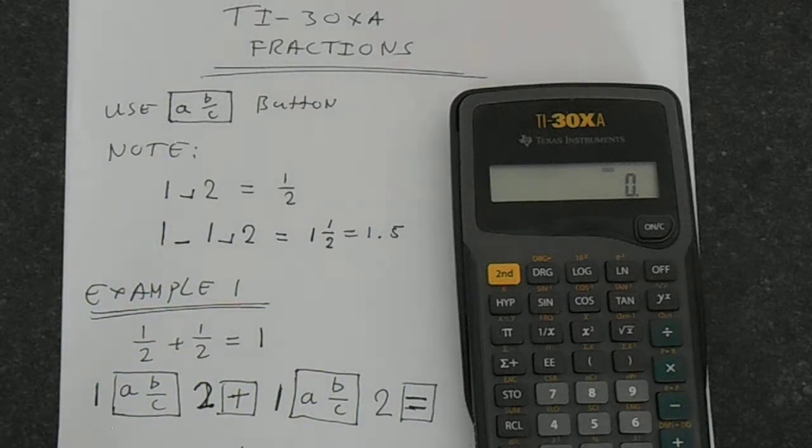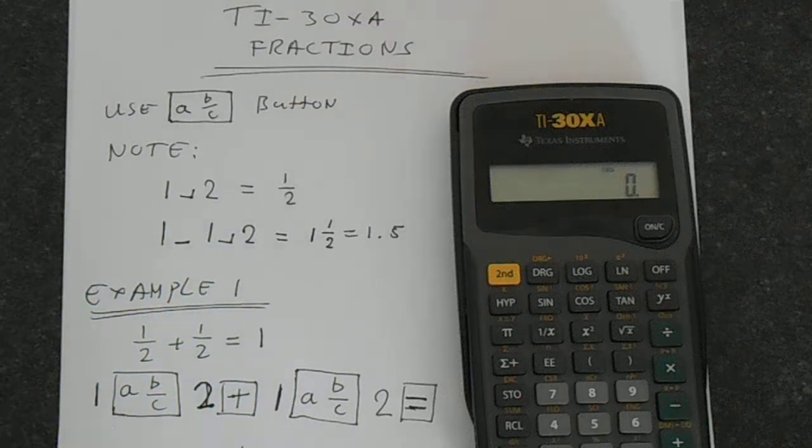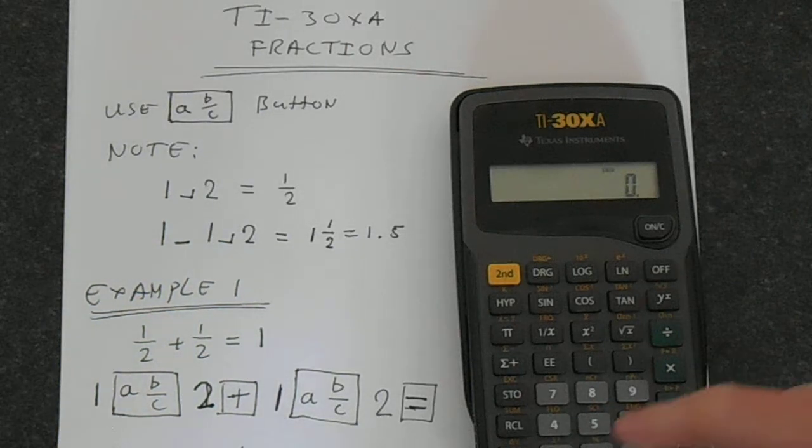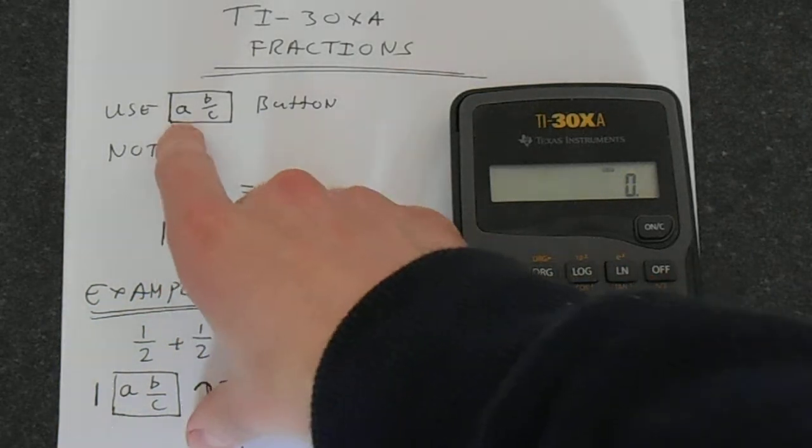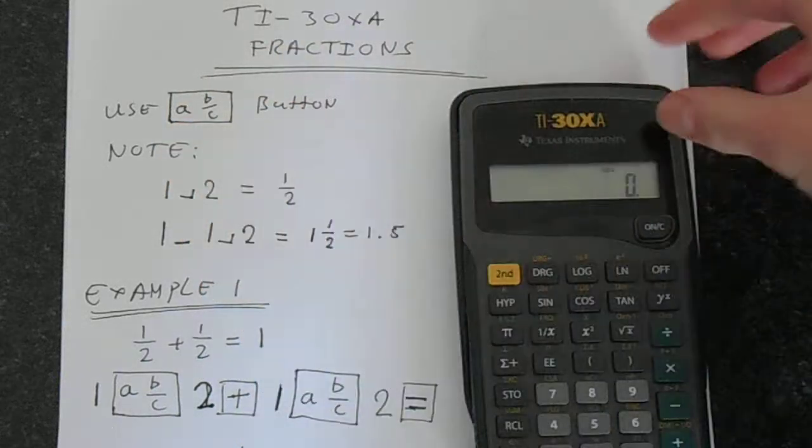In this video we're going to learn how to do operations with fractions on your TI-30XA. These are done using this button on your calculator that you find near the bottom, the a b over c button.